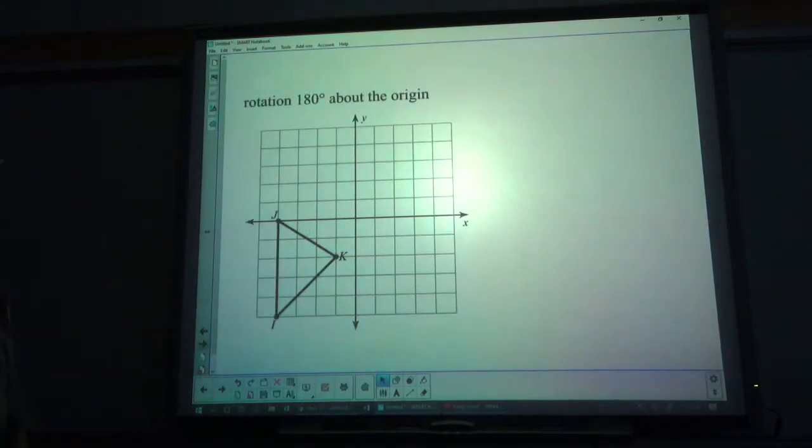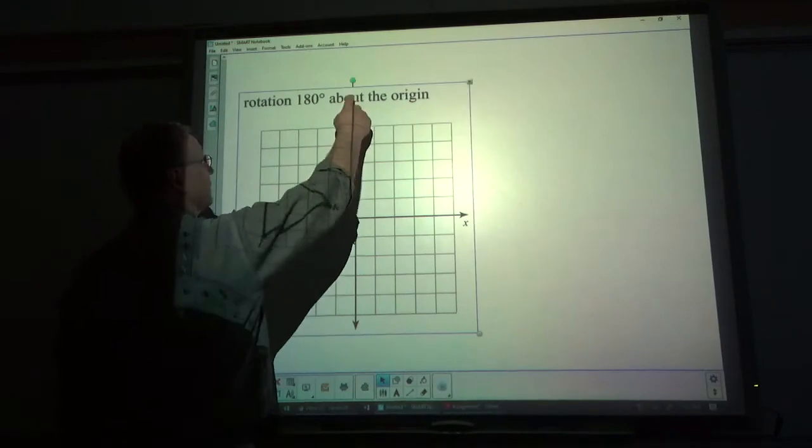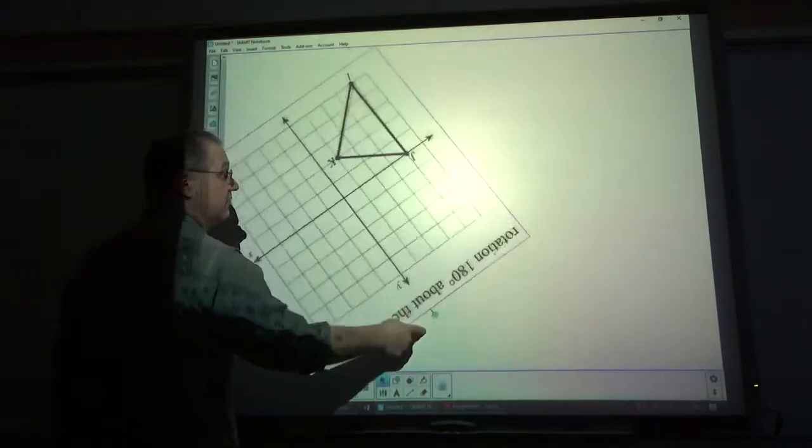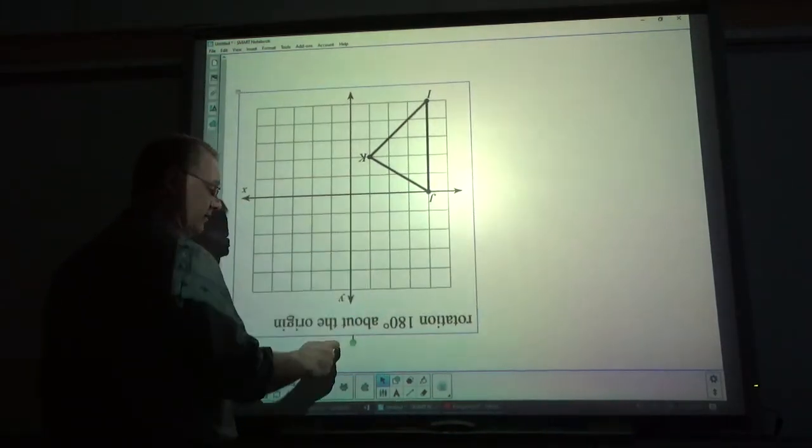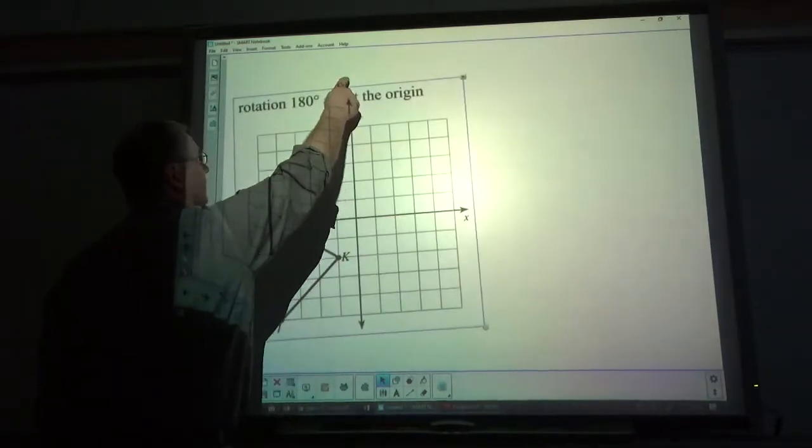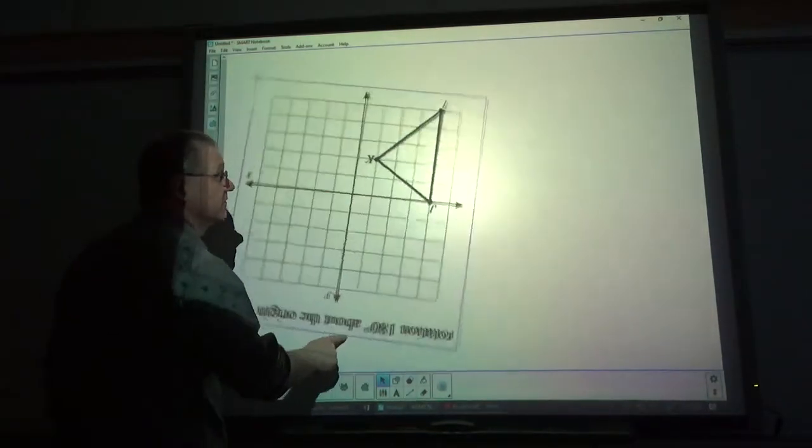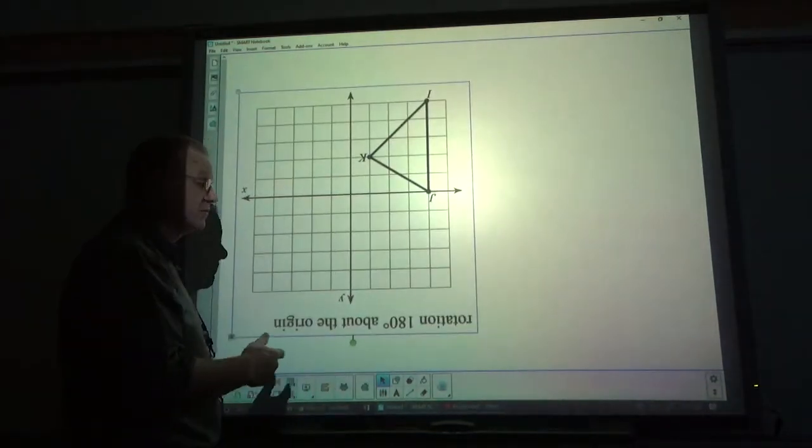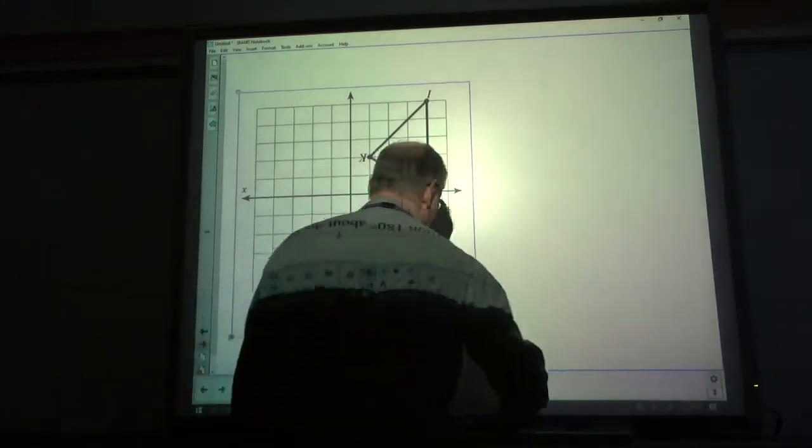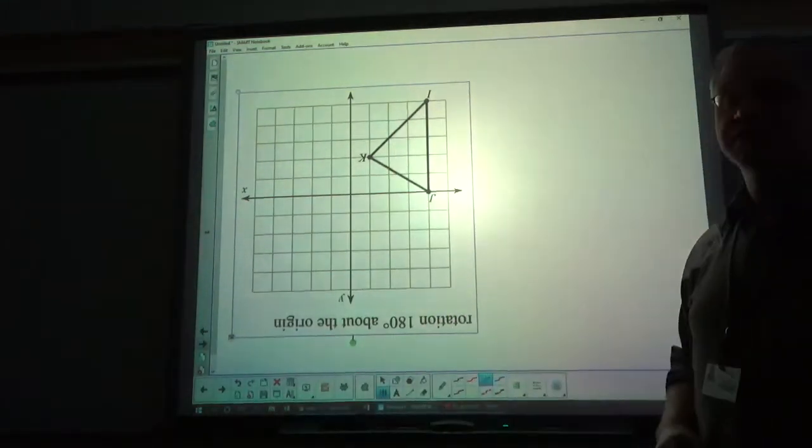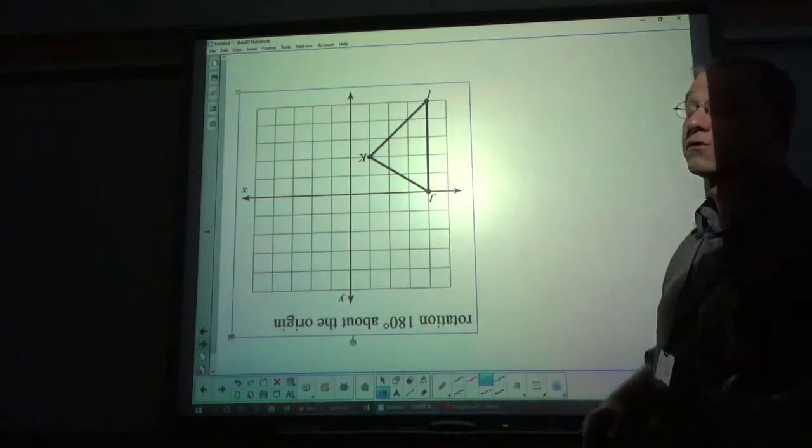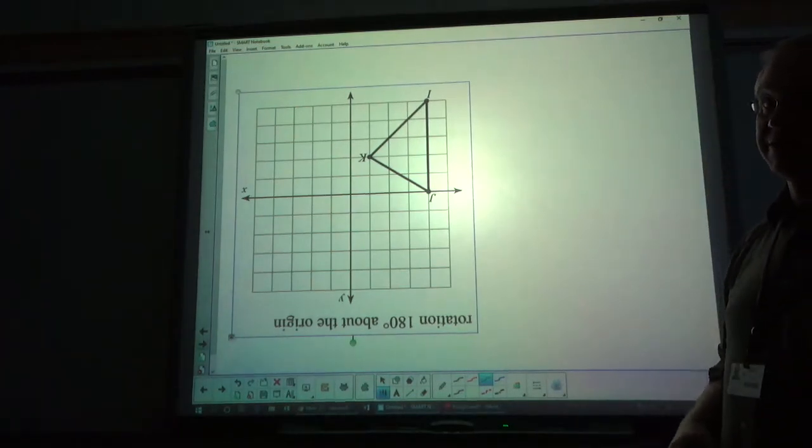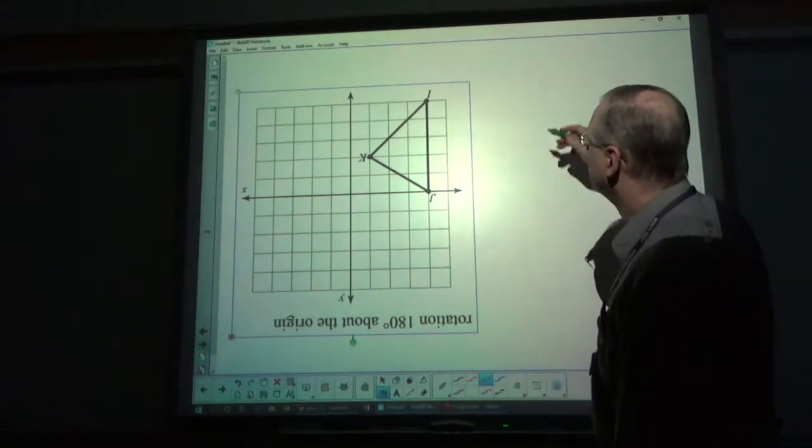Now, it says 180 degrees. Which direction? And the answer is, it doesn't matter. Because whether I turn this 180 degrees here, quadrant 1, or I turn it 180 degrees this way, it's still quadrant 1. So it does not matter which direction you rotate it in if it's 180 degrees. Or 360 degrees for that matter. It'd just go back to where it started.